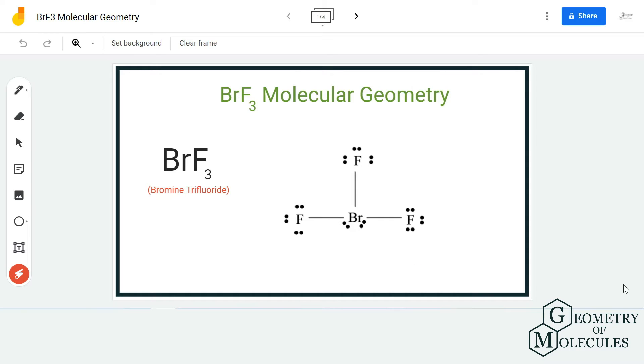So this is the Lewis structure of BrF3 molecule, in which bromine atom is the center forming single bonds with three fluorine atoms. Besides that, it has two lone pairs of electrons. Always make sure to consider all these things when you are looking at the Lewis structure, as the lone pairs, the bonding pairs, and the atoms bonding to the central atom play a major role when it comes to determining the molecular geometry.